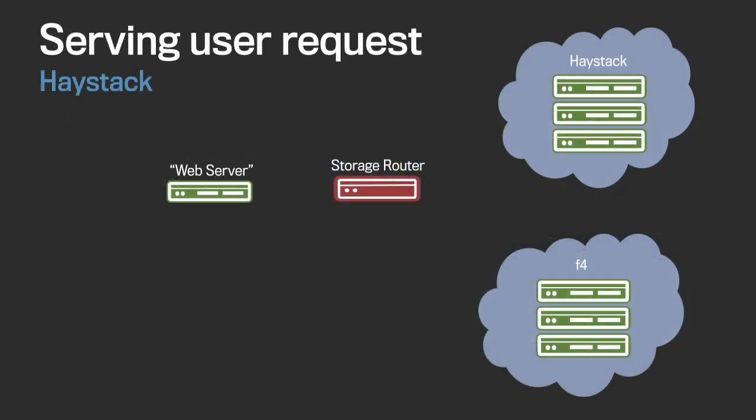Let me give a little context about what our storage system looks like. Let's go through two typical requests, starting with a user uploading a photo to Facebook — an HTTP POST request where the body is the photo. It hits a web server running something like PHP. The web server runs the application logic, generates a request to a storage router, which is aware of the underlying storage architecture. For a new photo, we write it to Haystack, finding three available Haystack hosts that have space for the object.